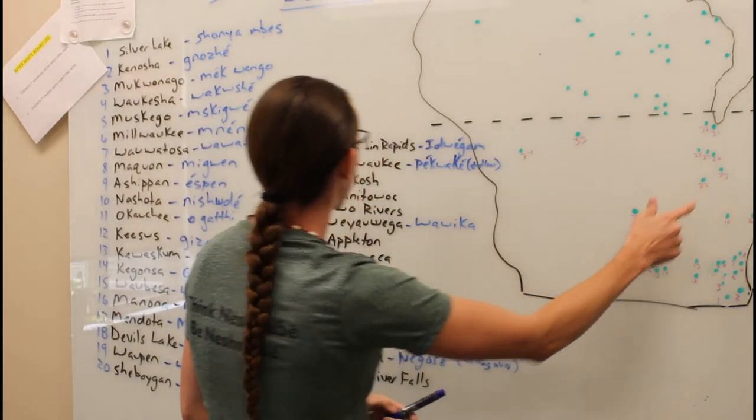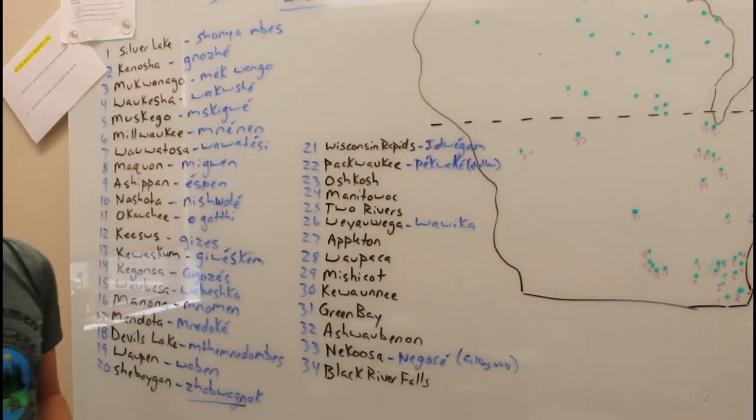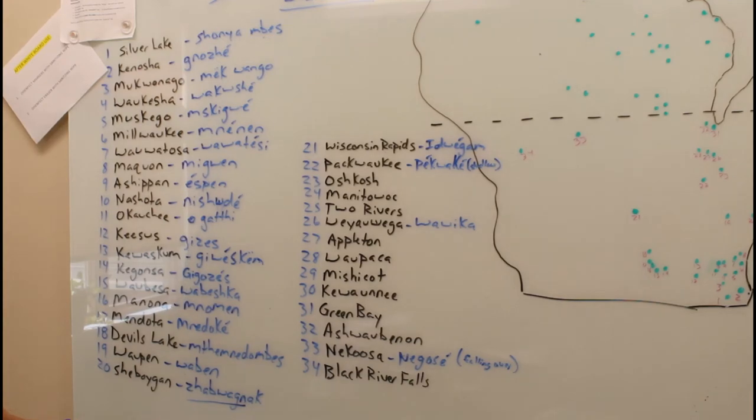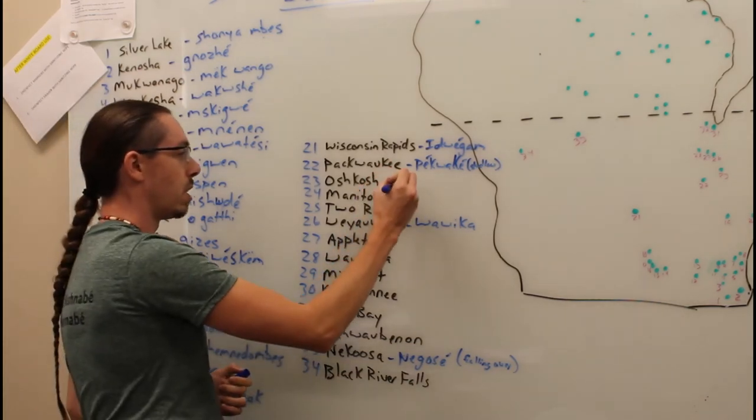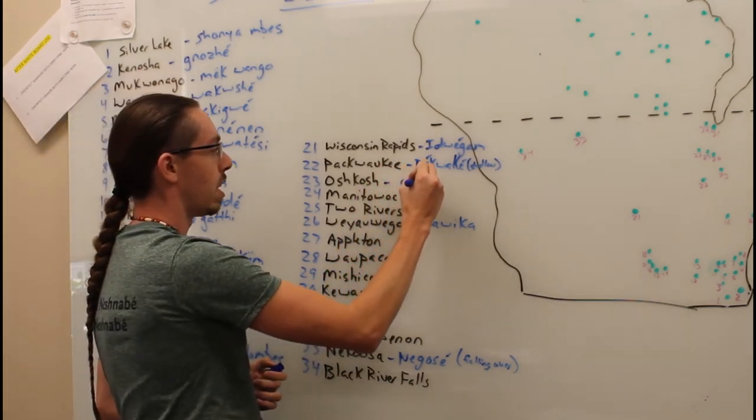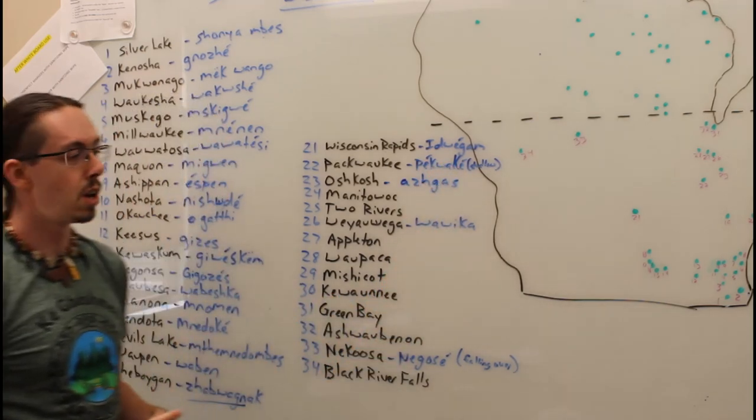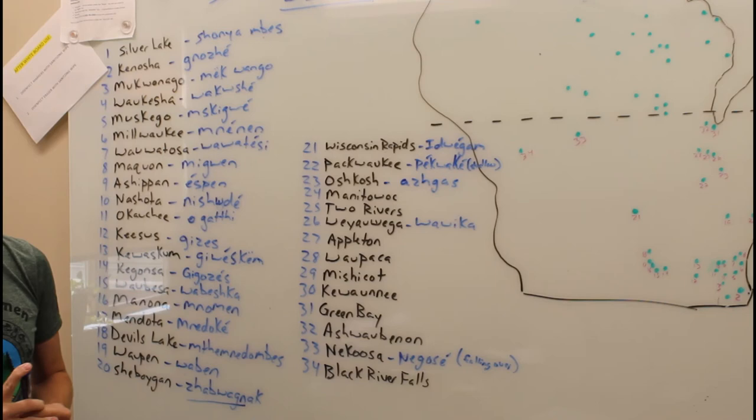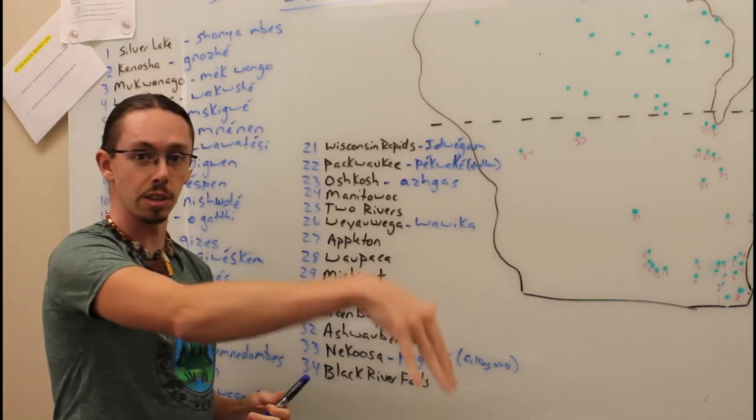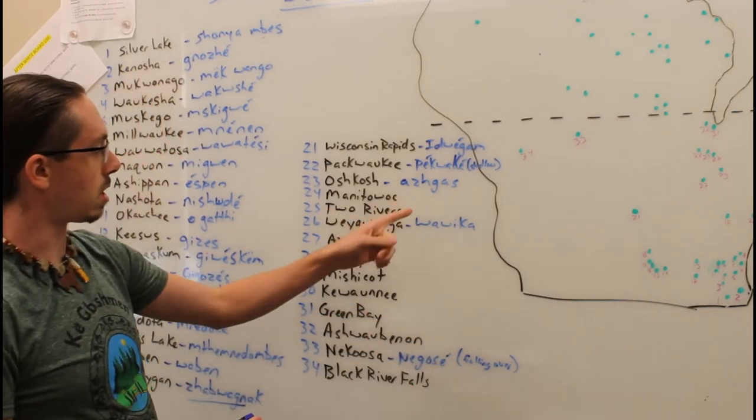Move it northeast of there, number 23, Oshkosh, Wisconsin. In Potawatomi, Oshkosh is a bridge. Oshkosh is a little bridge.